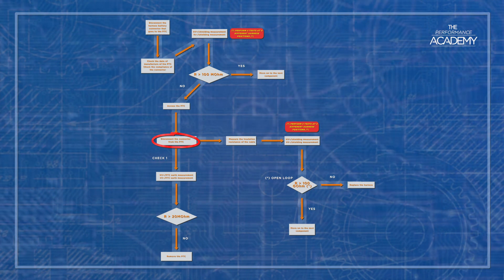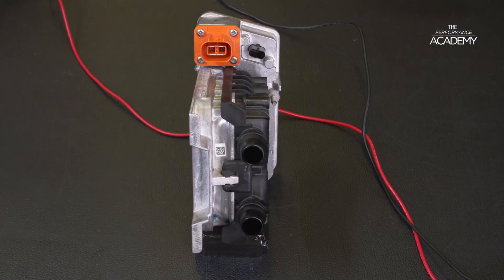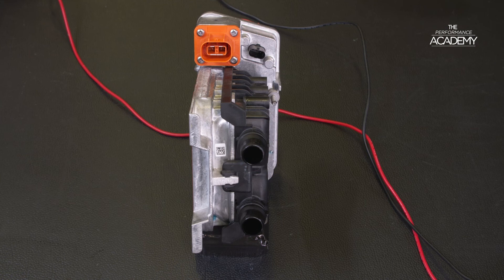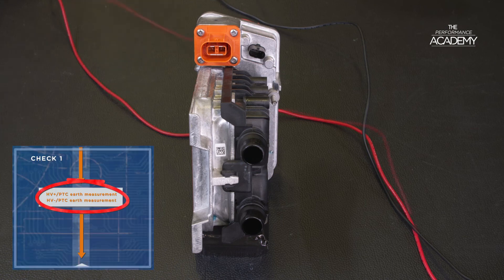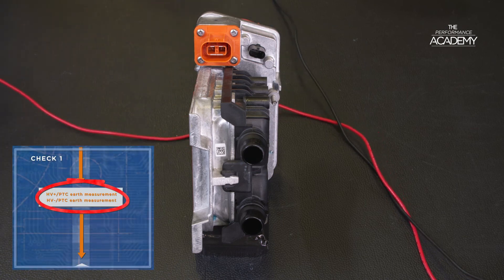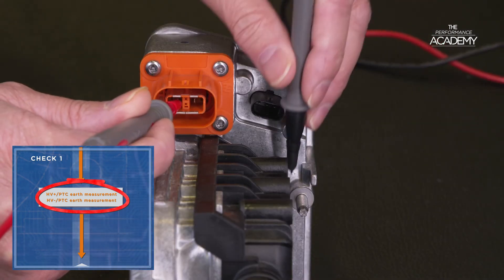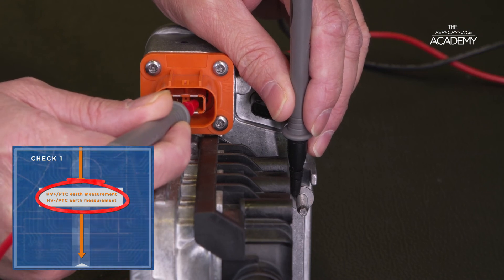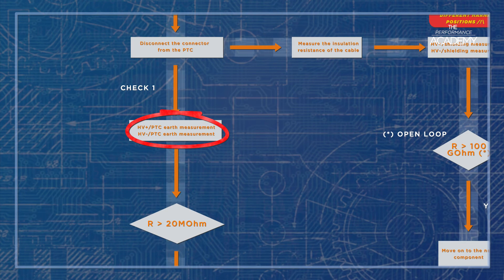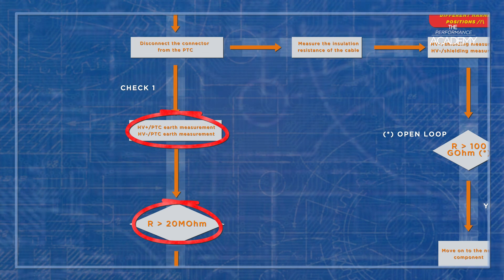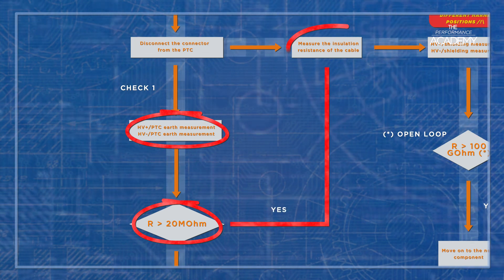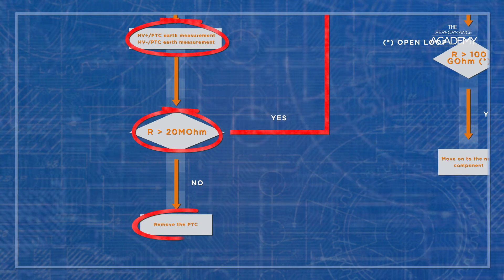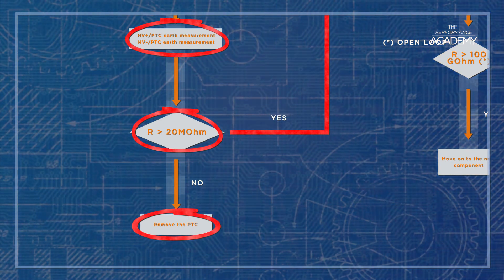For filming, we've removed one from underneath the vehicle so we can clearly see the test. The flow chart instructions ask for a check between high voltage plus to PTC Earth and high voltage negative to PTC Earth. The either or result box on the flow chart states if R is greater than 20 mega ohms, continue on to check the high voltage supply cable. If no, remove and replace the PTC heater.